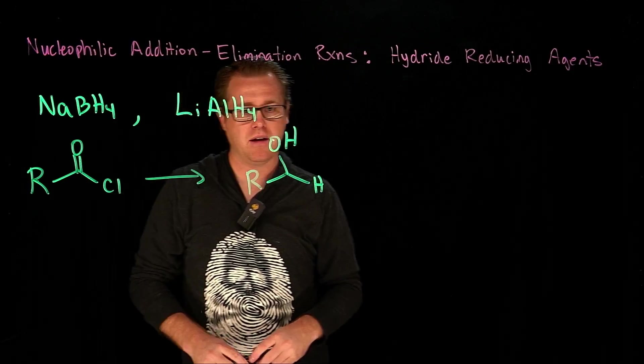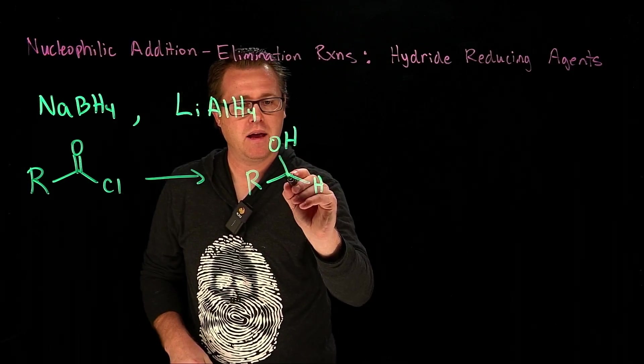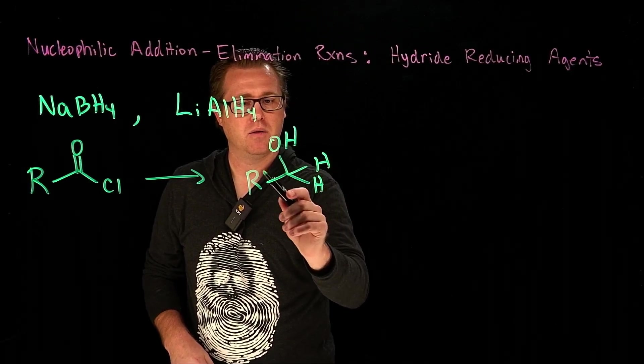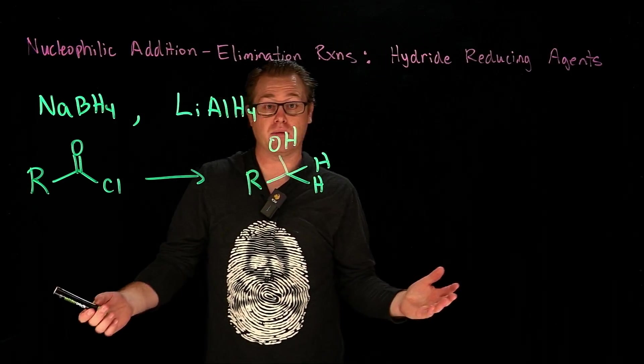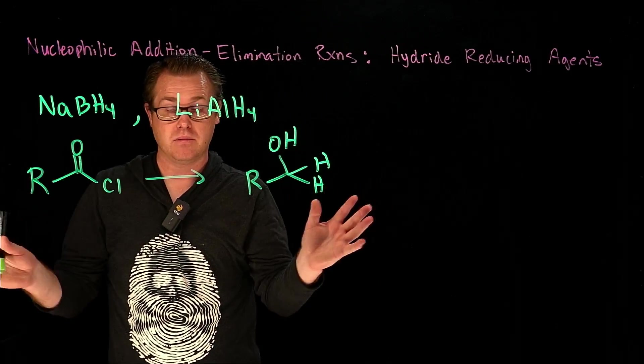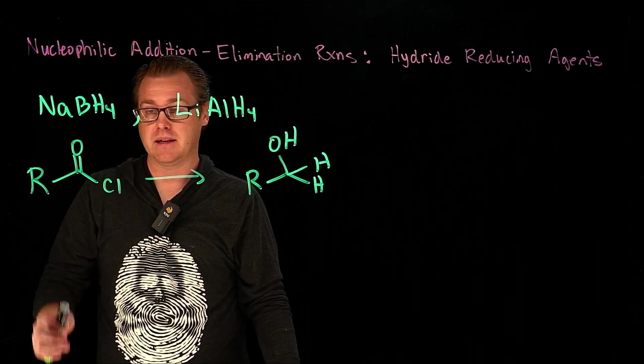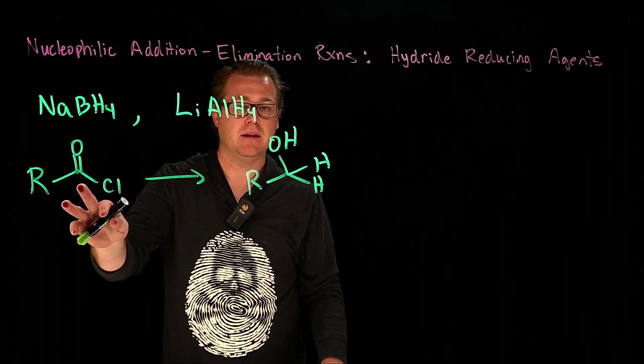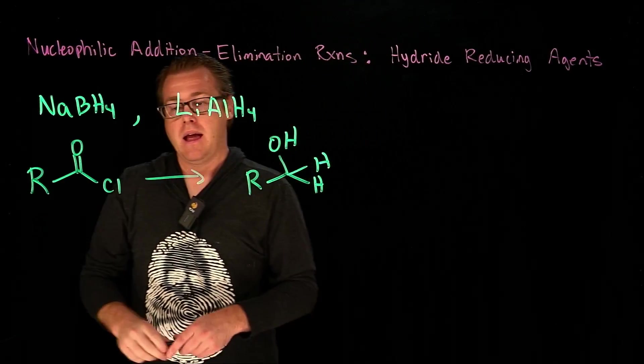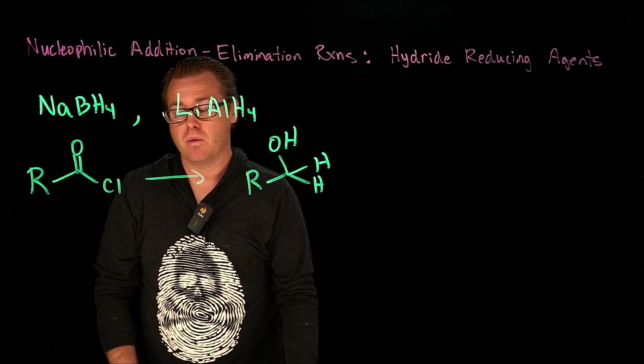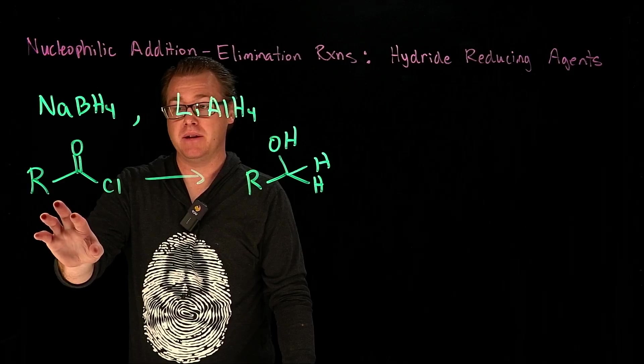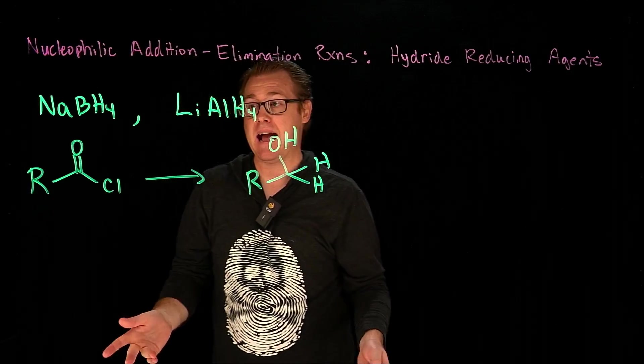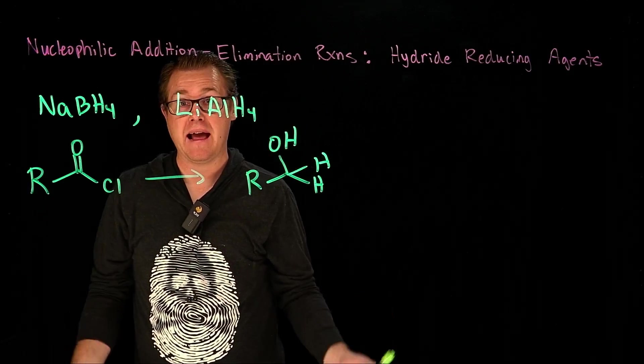Let's see, we got one carbon there, and so we would have one, two, three, four, just like that. So that's really what the overall reaction's doing - it can take an acid chloride and convert it to an alcohol. And as we progress in this video, we're going to take a look at other carboxylic acid derivatives and see how these reagents interact with those.